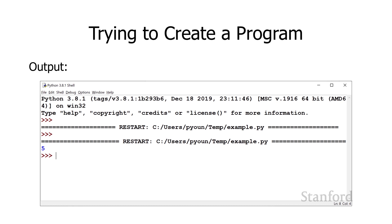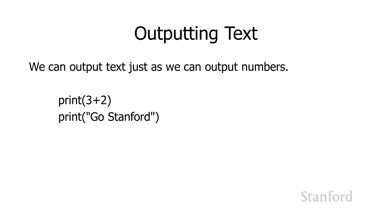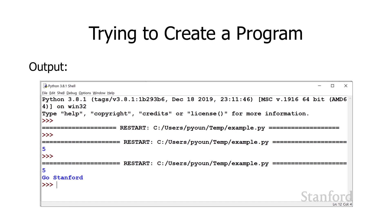I'm printing the results of a mathematical equation, but I can output other things. Remember last lecture, Python works with integers, floating point numbers, and also strings, which allow us to manipulate text. So for example, print("Go Stanford") — those quotes indicate that I have a string of characters G-O space S-T-A-N-F-O-R-D, rather than variables named Go and Stanford. If I go ahead and say print and tell it to print the string "Go Stanford", that's exactly what it'll do. So with print(3 + 2) and print("Go Stanford"), you can see it printed both of those.